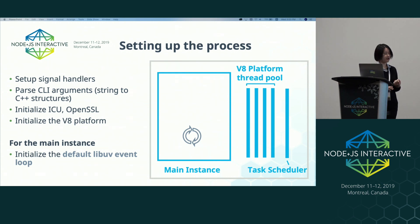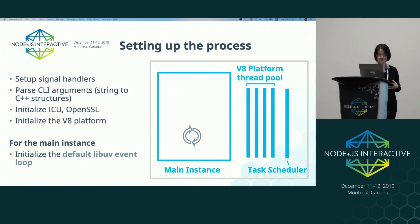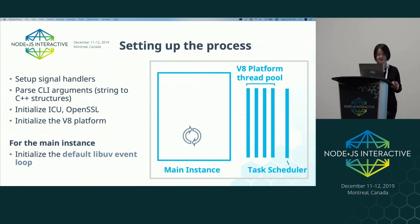When initializing the main instance, first we initialize the libuv event loop on the main thread, but we'll only add handles to it later when we initialize the environment. The main instance simply uses the default libuv event loop.